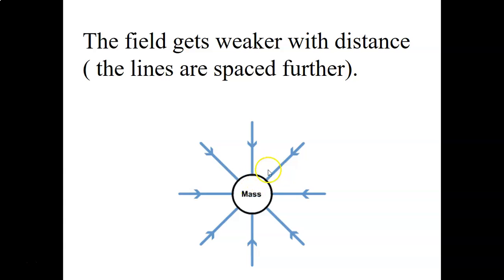And the gravitational field lines always point to the mass of an object. As you get further away from the object, the field lines get further and further apart, which shows that the field gets weaker. So if I put an object here, there's a force of gravity on it. And if I put it here, twice as far away, the gravitational field strength is one-fourth. It also decreases with the square of the distance.